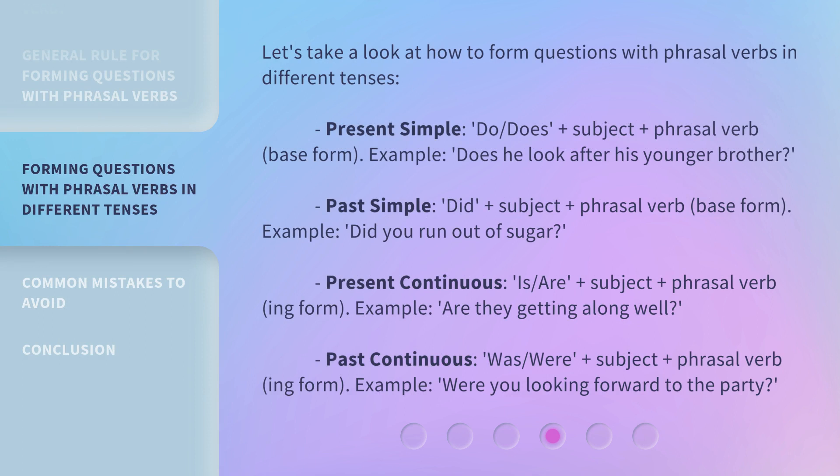Let's take a look at how to form questions with phrasal verbs in different tenses. Present simple: do/does + subject + phrasal verb (base form). Example: 'Does he look after his younger brother?' Past simple: did + subject + phrasal verb (base form). Example: 'Did you run out of sugar?' Present continuous: is/are + subject + phrasal verb (ing form). Example: 'Are they getting along well?'